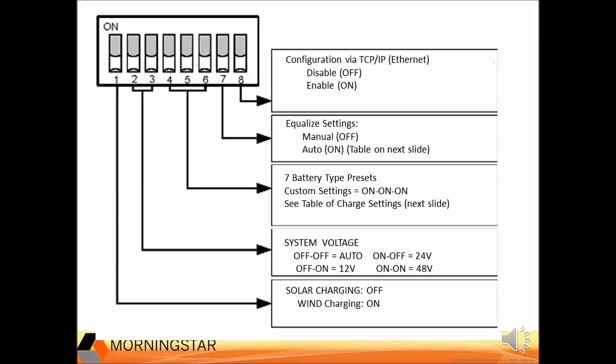This is the breakdown of the TriStar MPBT DIP switch settings. Starting with the switches that were enabled in the previous slide, switch eight enables the Ethernet write commands. We made it possible to disable this as a security measure so someone can't connect to the controller remotely and change the settings. The program custom settings are enabled with switches four, five, and six on, and there are also seven factory presets that will be shown in the next slide.